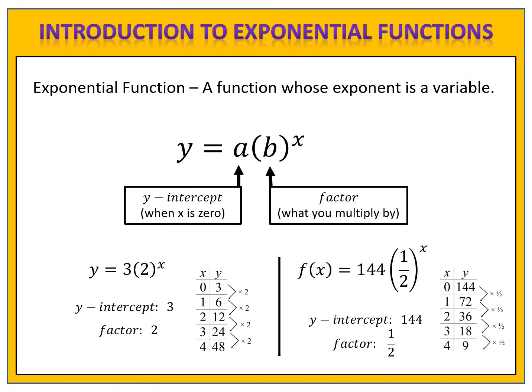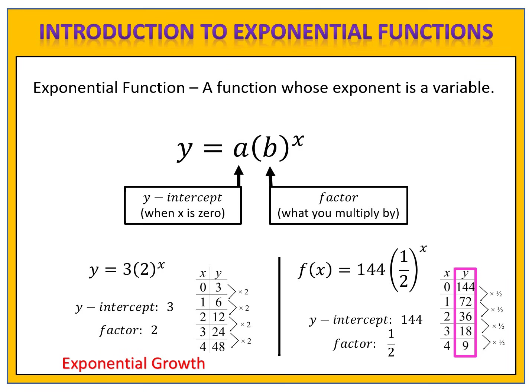Something worth noticing in our input and output tables are the patterns in the y column. Notice in the first function the y values are growing — they're increasing: 3, 6, 12, 24, and 48. When an exponential function is increasing, we have what's called exponential growth. Compare that with the second example. Notice the pattern in the y column here: 144, 72, 36, 18, 9. This function shows the y values are decreasing. When the y values are decreasing in an exponential function, we have what's called exponential decay.